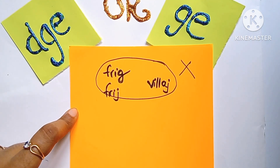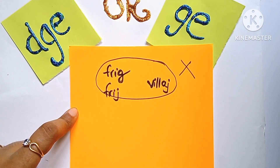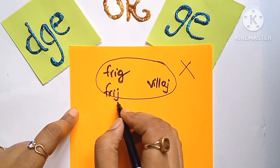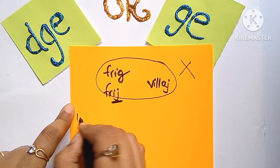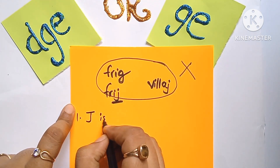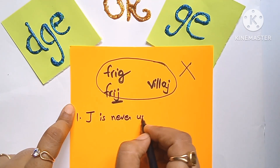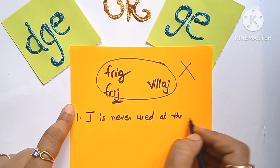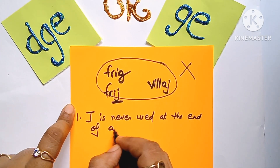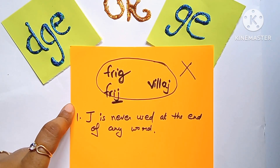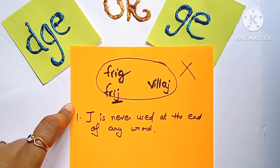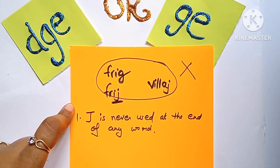Now I will tell you why. First of all, the point is: at the end of the word, if the sound is J, you don't use J. J का use नहीं करते हैं. J is never used at the end of any word. J sound के लिए आप J का use नहीं करते हैं. I hope this first point is very clear.